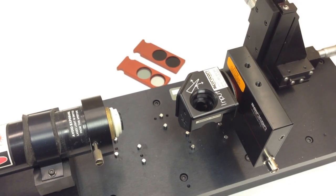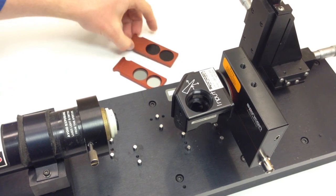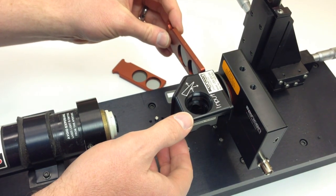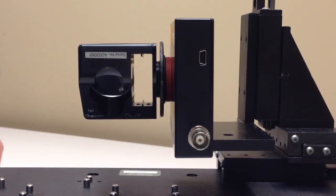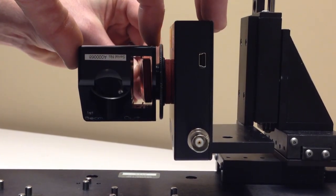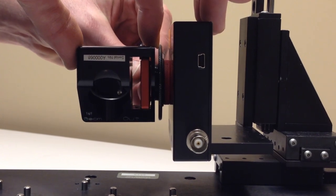But another good way to adjust the beam attenuation is also these sliders that we provide with the LBS 300. You can simply slide them in. They have a couple of different neutral density values on each side, and you can just slide this in to adjust the attenuation level.